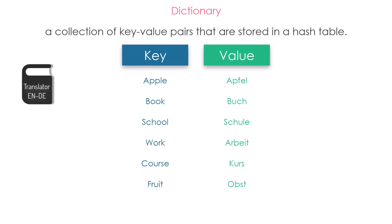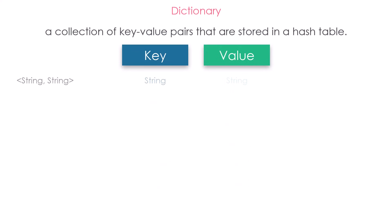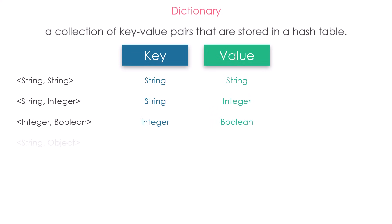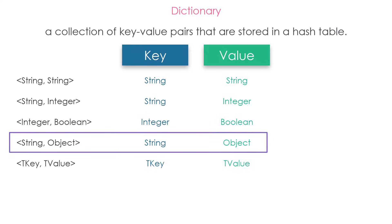To define a variable of type dictionary, we have to define a type for the key and for the value. For example, dictionary of string-string — in this case, both key and value are of type string. But this must not always be the case. We could have, for example, string and integer, or integer and boolean, string and object, and so on. We could have any data type for the key and the value, depending on what we want to store in the dictionary. The commonly used combination is string for the key and object for the value. In this way we could store any data we need as value, because object type covers all other types.